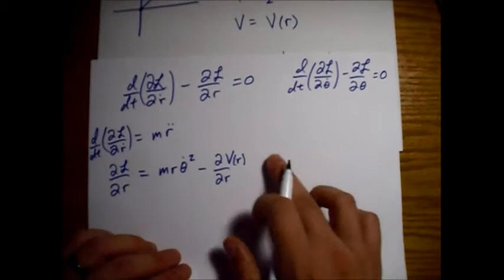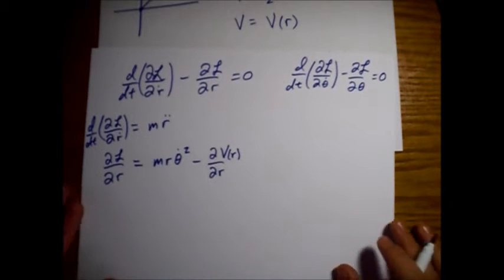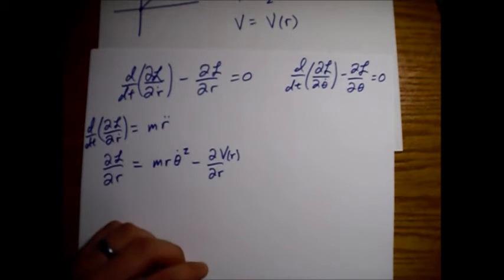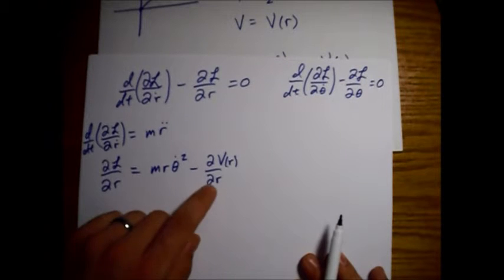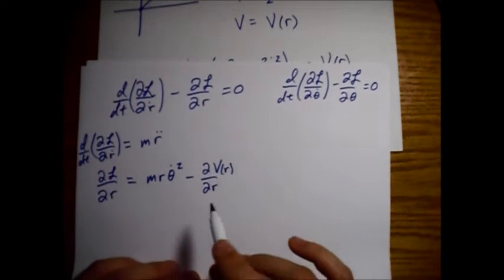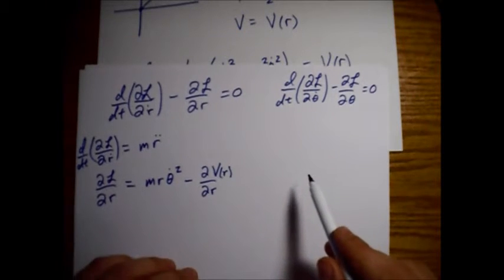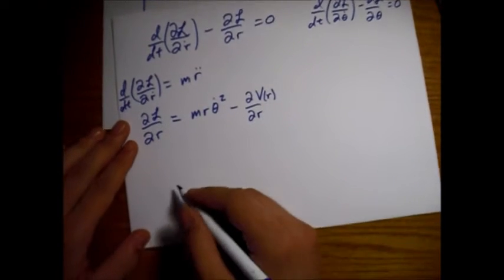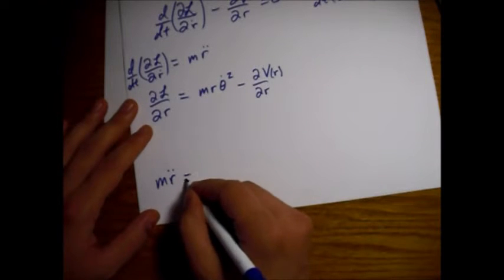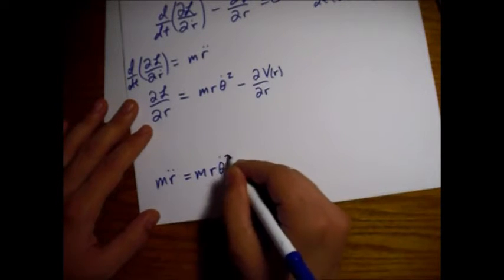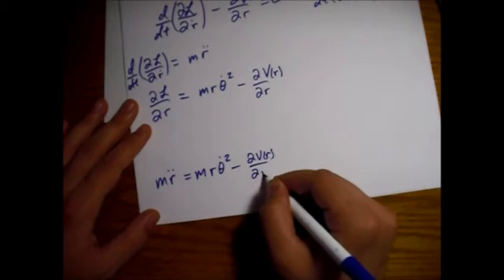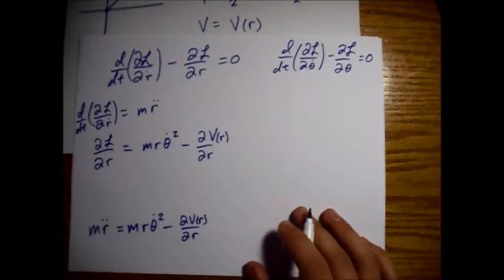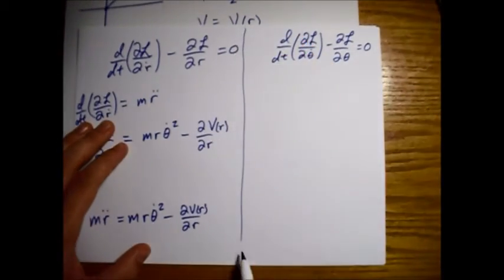Setting those two pieces equal to each other gives our first equation of motion. Moving terms over and making them positive, we set the two pieces equal. Let me draw a quick line to keep these separate.